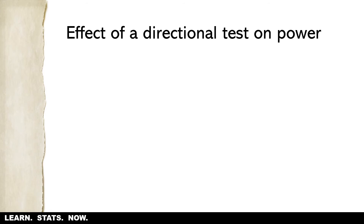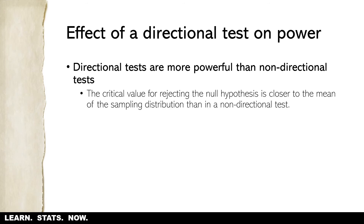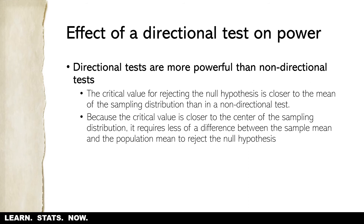What is the effect of a directional test on the power of the test — the ability to correctly reject a false null hypothesis? Directional tests are more powerful than non-directional tests. The reason is that the critical value for rejecting the null hypothesis in a directional test is closer to the mean of the sampling distribution, which means it requires less of a difference between the sample mean and the population mean to reject the null hypothesis.